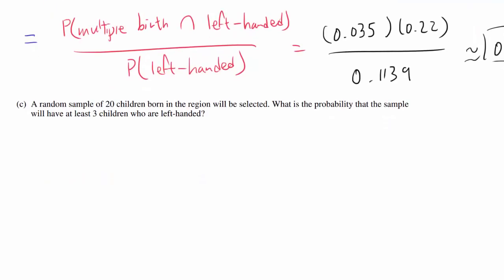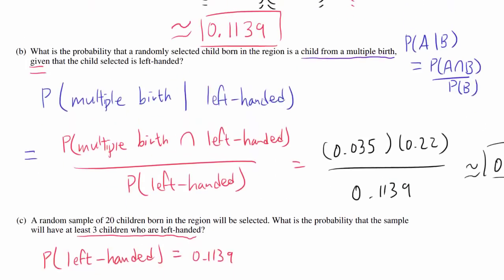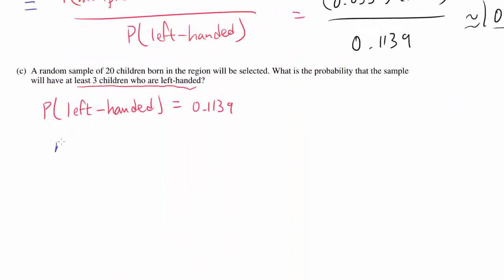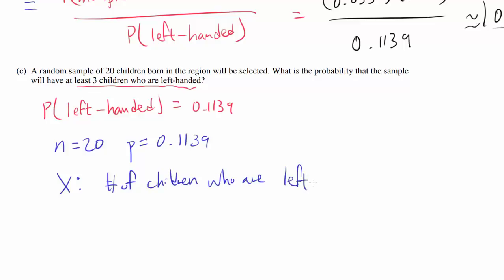Part C: A random sample of 20 children born in the region will be selected. What is the probability that the sample will have at least three children who are left-handed? From Part A, the probability that one person is left-handed is 0.1139, and the sample size is 20. Let X be the number of left-handed children. We want to find P(X ≥ 3).